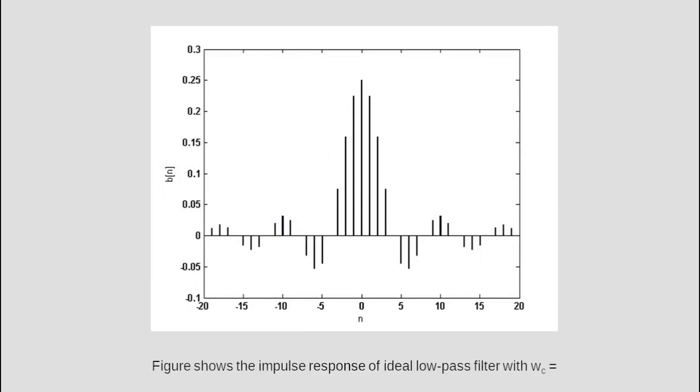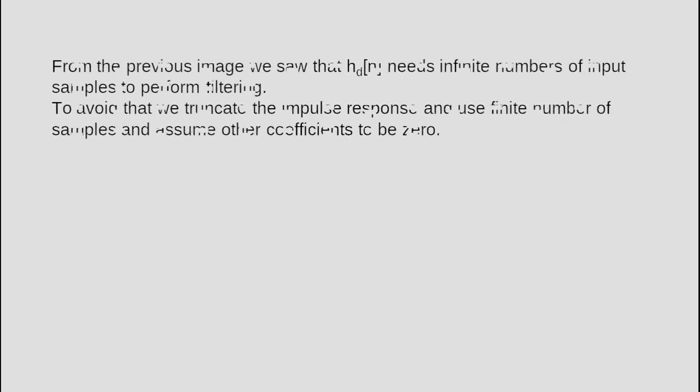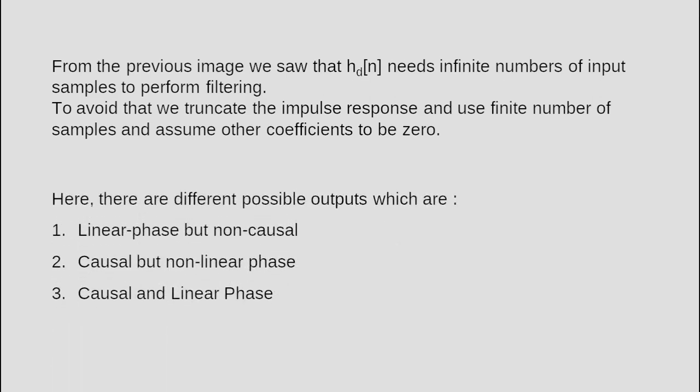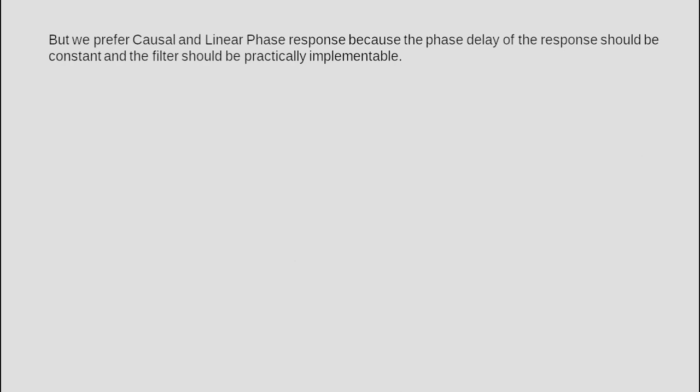The given figure shows the impulse response of an ideal low-pass filter with cutoff frequency ωc = π/4. We can see that H_D(n) needs an infinite number of input samples to perform filtering. To avoid that, we truncate the impulse response and use a finite number of samples, assuming other coefficients to be zero. The possible outputs include: linear phase but non-causal, causal but not linear phase, and causal and linear phase. We prefer causal and linear phase response because the phase delay should be constant and the filter should be practically implementable.